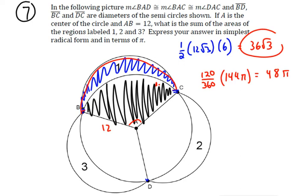So the area of the sector is 48 pi, and then you subtract away the 36 root 3, and that gives you the area of this.